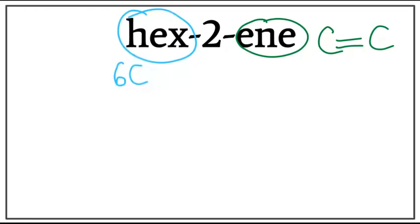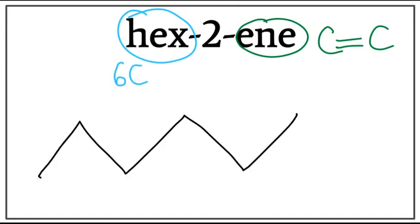Let's draw the six carbons. A trick to draw these is that you always count till one less than the number of carbons you want to draw: one, two, three, four, five. Now let's number them: one, two, three, four, five, and six.